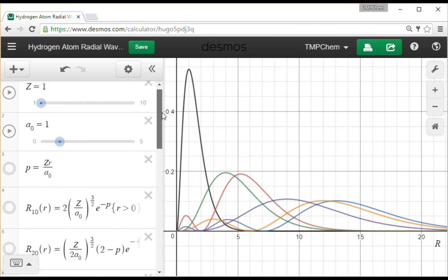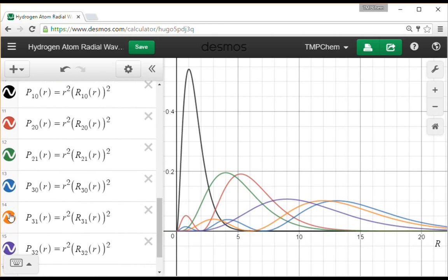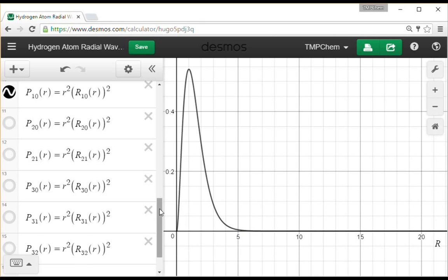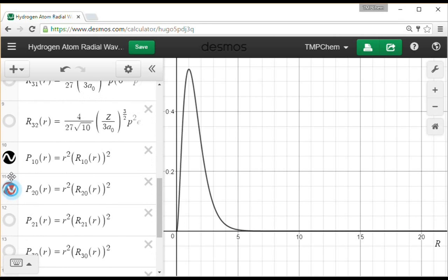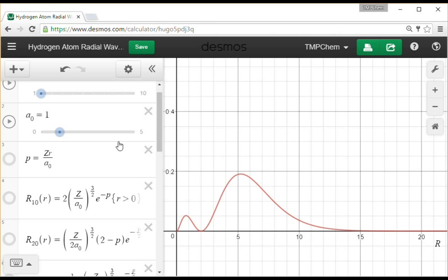So these are the plots for our orbitals. Let me take one more point of note before we go. Maybe I'll use the 2p. That one's a little more spread out. Okay, so I have the 2s wave function and the 2s radial distribution function.